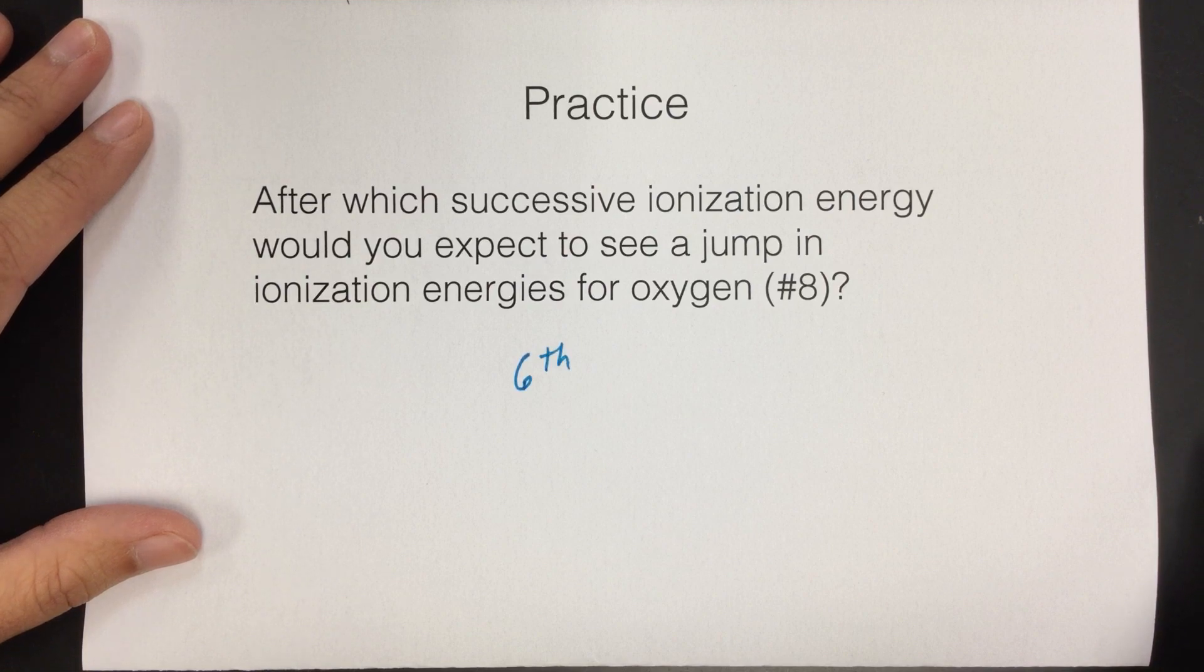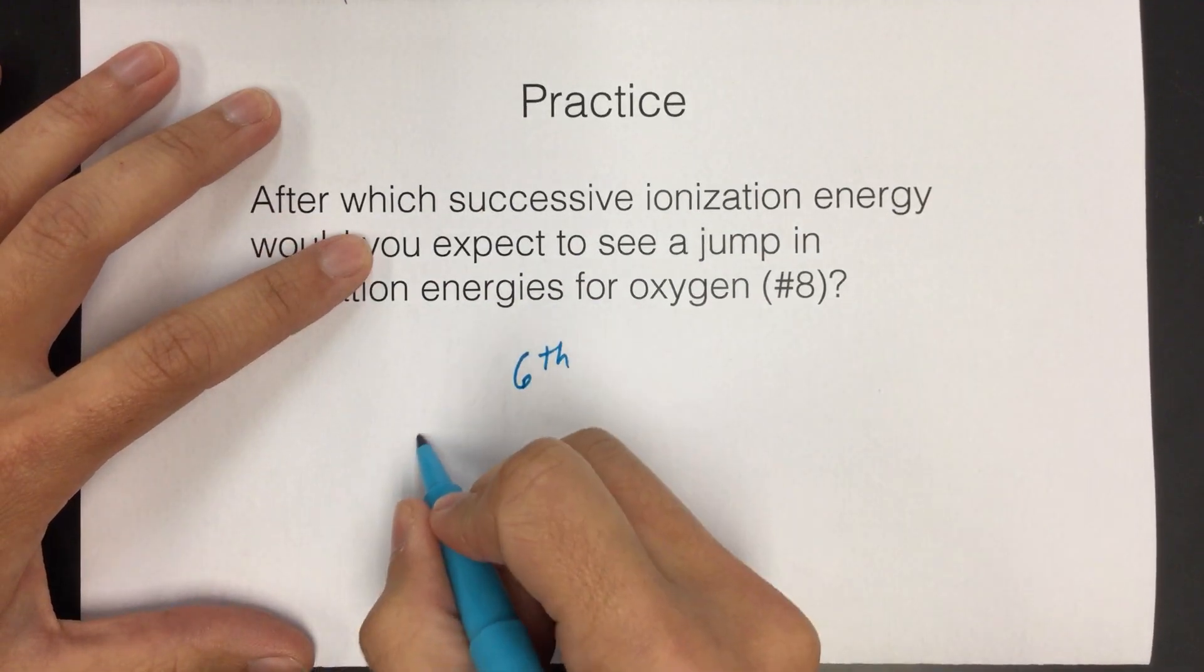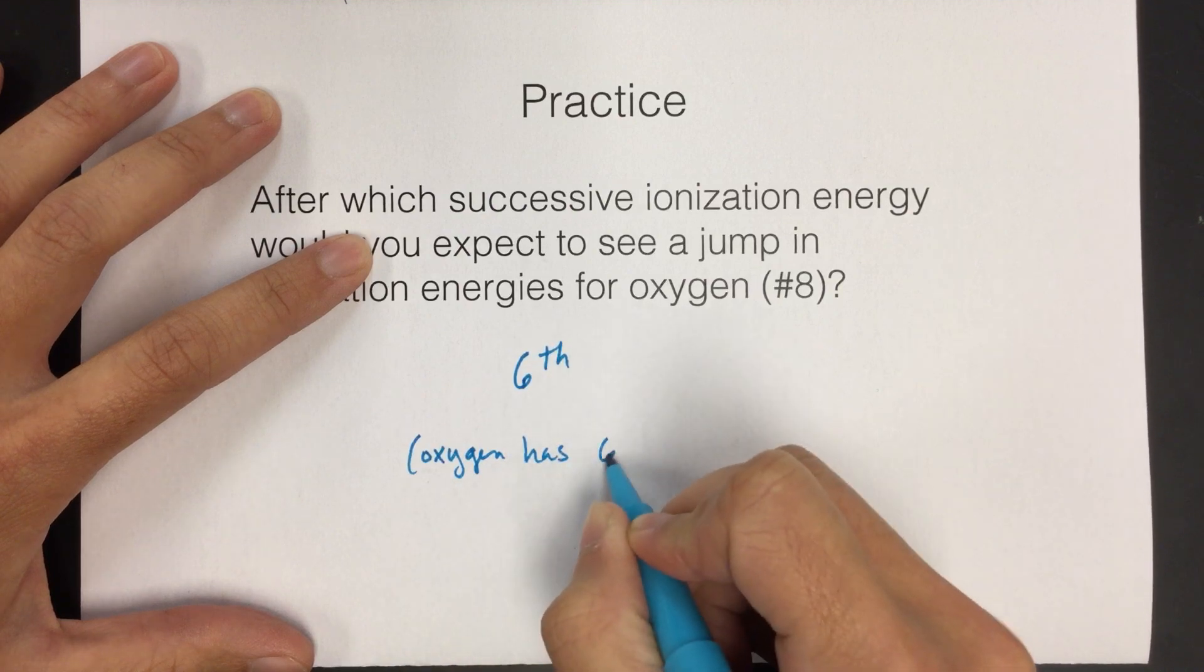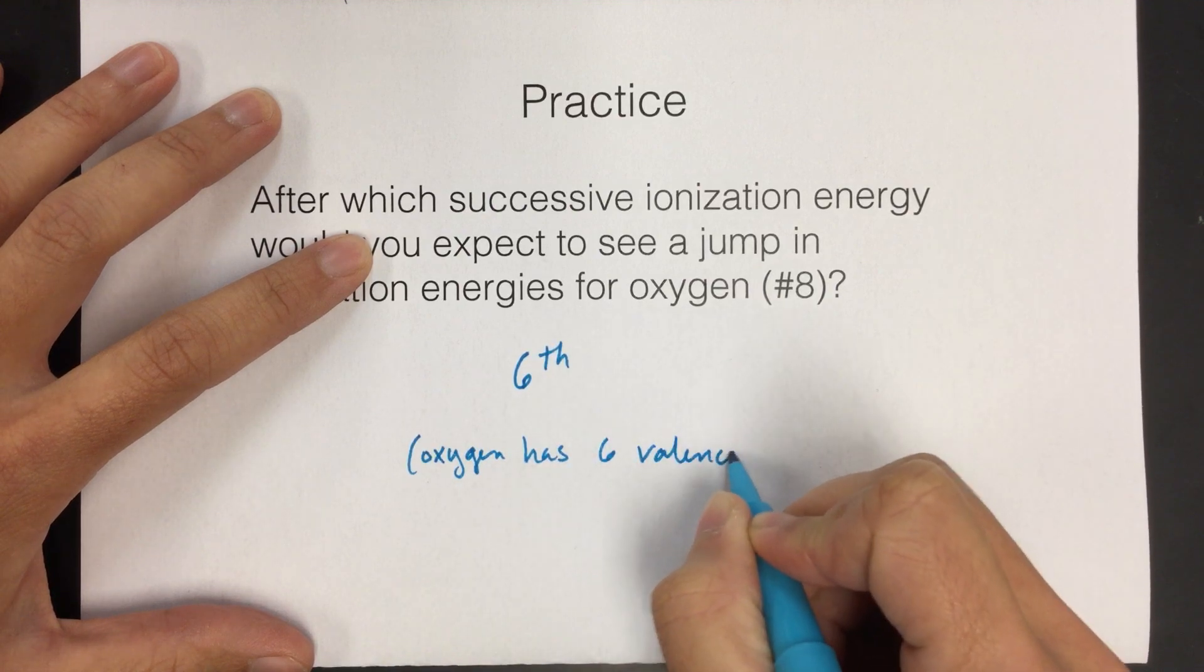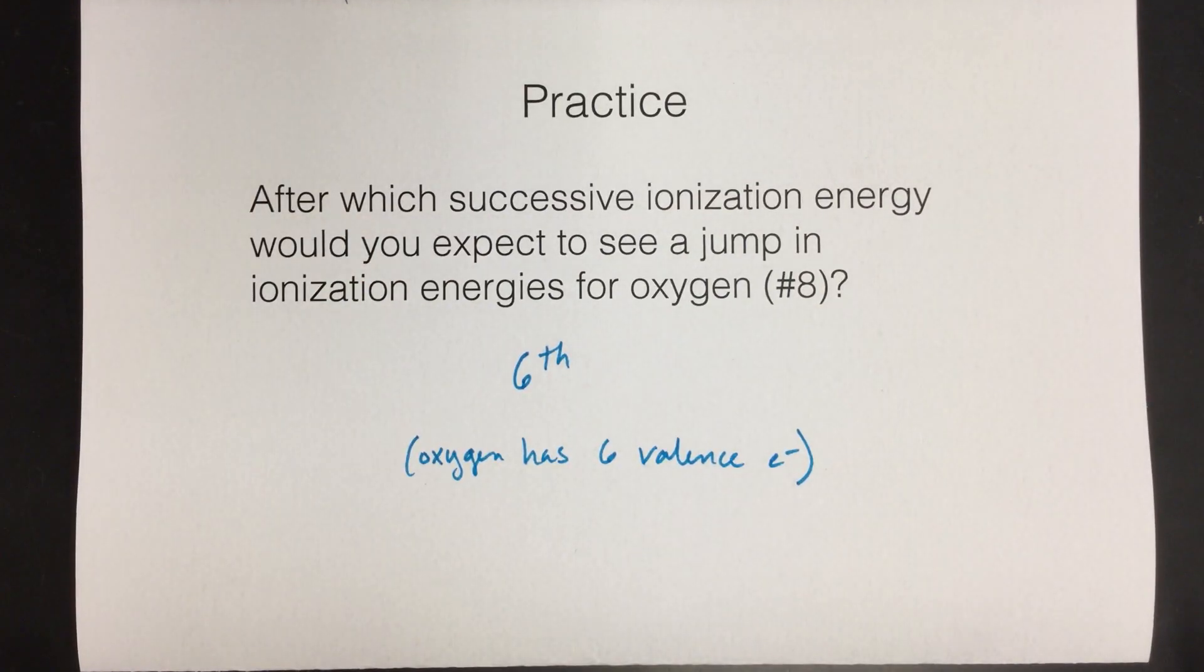That's how easy it is. So we just have to pay attention to how many valence electrons. So this is because oxygen has six valence electrons. You don't have to write that in your answer, but that's just for me to tell you why we know it's the sixth.